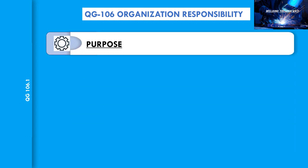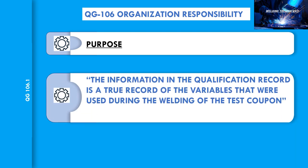Now, what is the purpose of giving only the designated welding engineer such specific responsibility? The welding qualification requirements of Section 9 code that an organization adopts must be fully supervised and controlled in such a way that the information in the qualification record is a true record of the variables that were used during the welding of the test coupon.